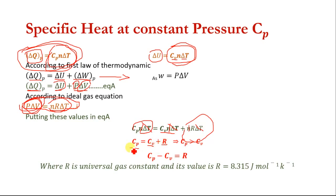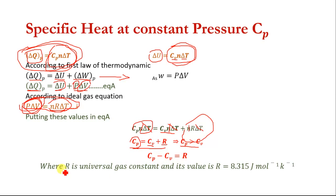This equation proves that C_P is greater than C_V by R. We can also write this equation as C_P minus C_V equals R, where R is the universal gas constant and its value is 8.315 Joule per mole Kelvin.